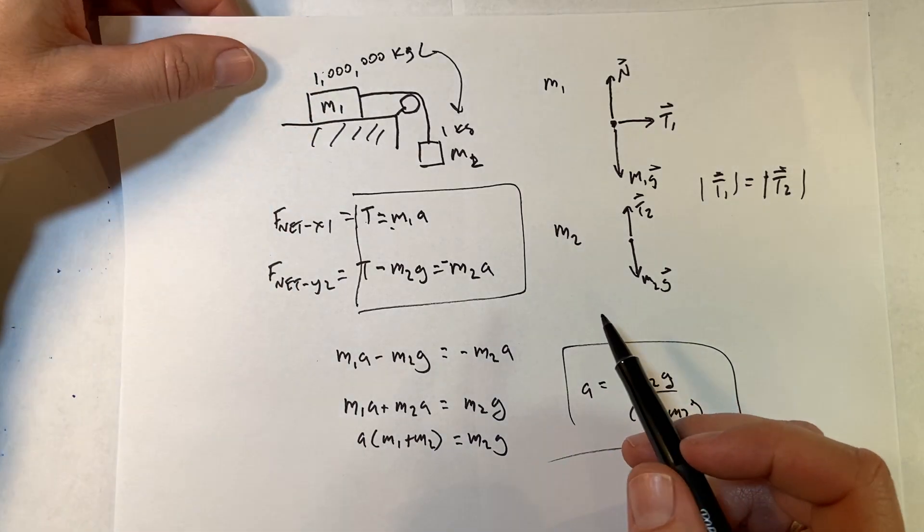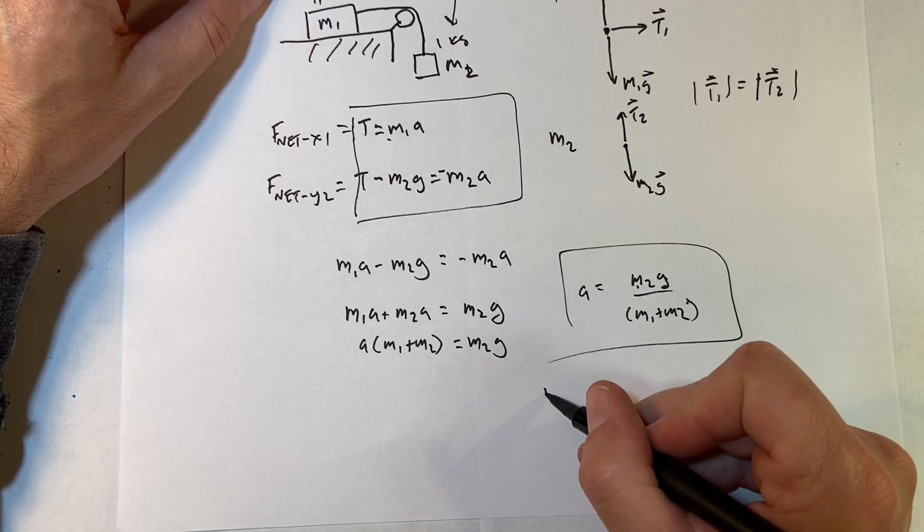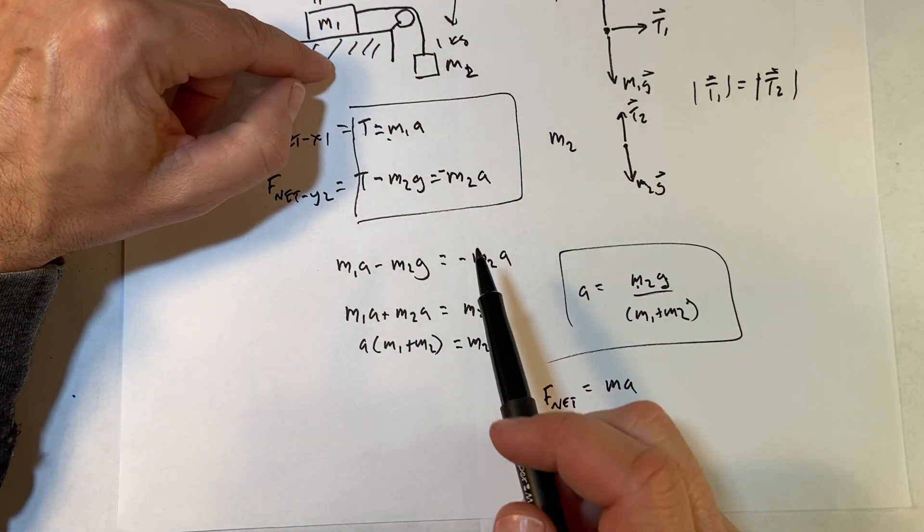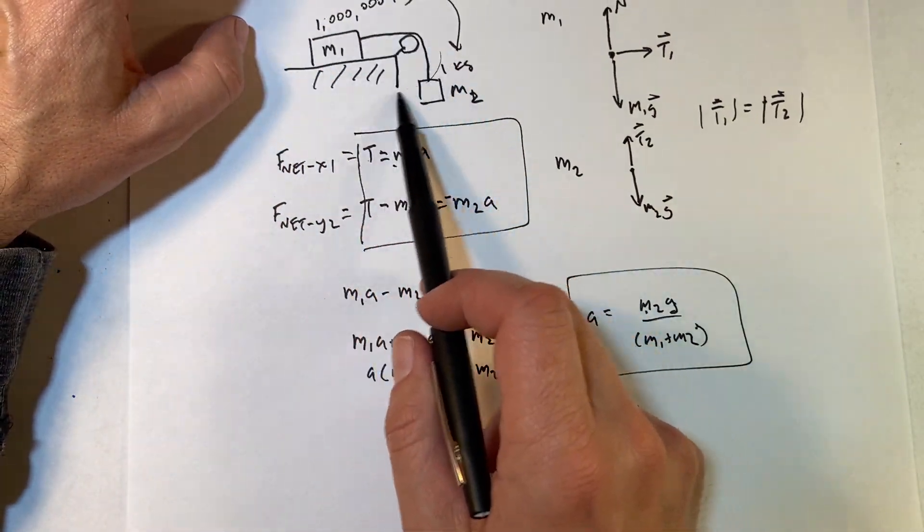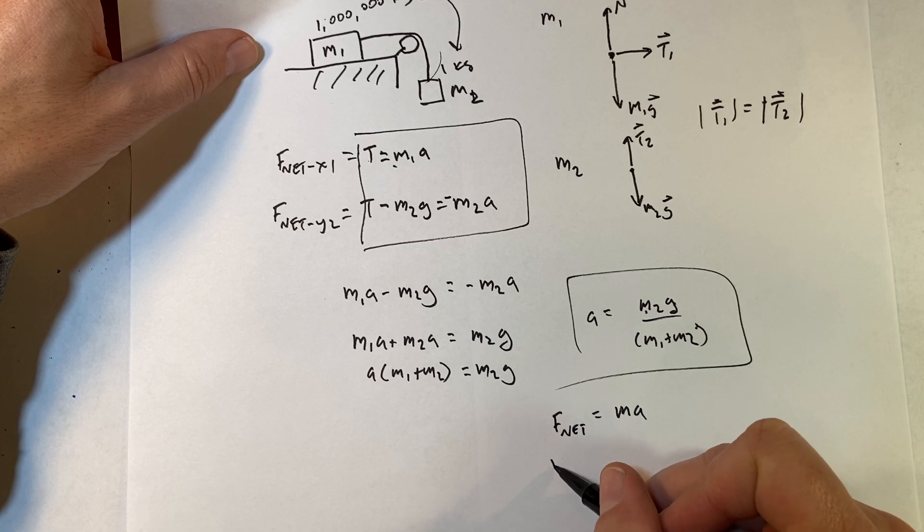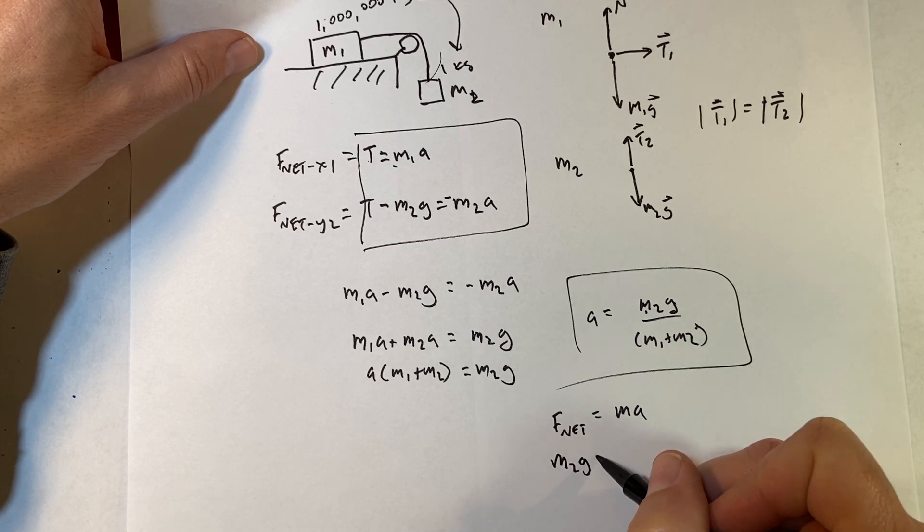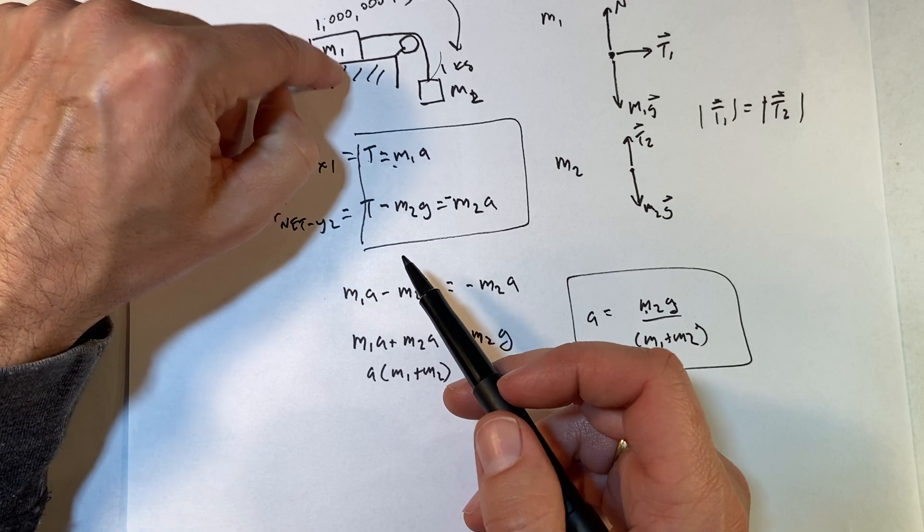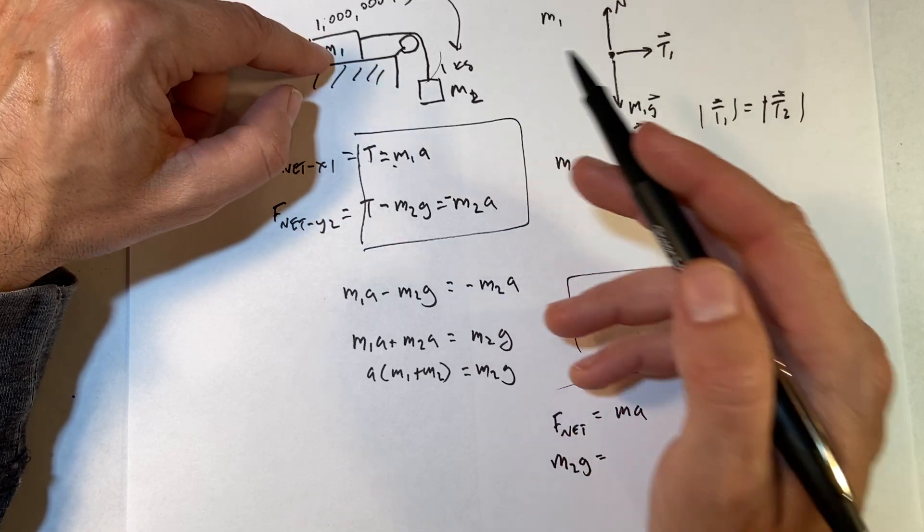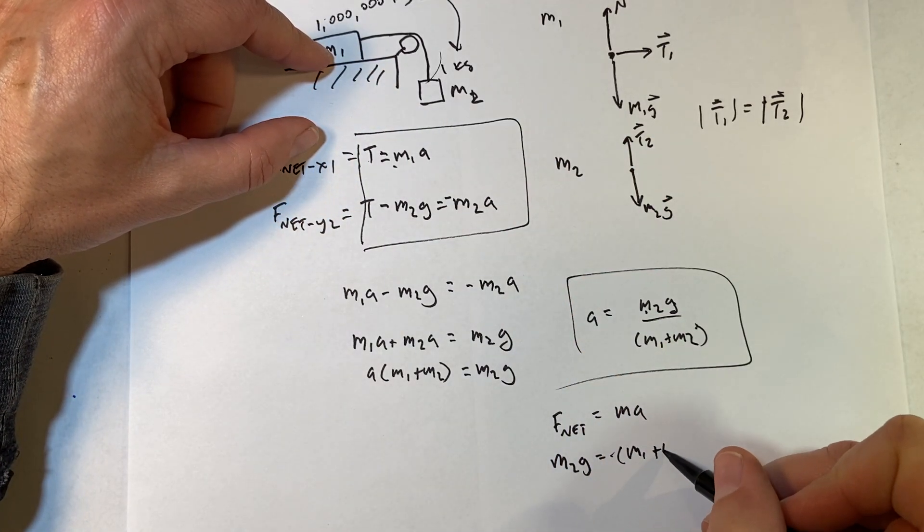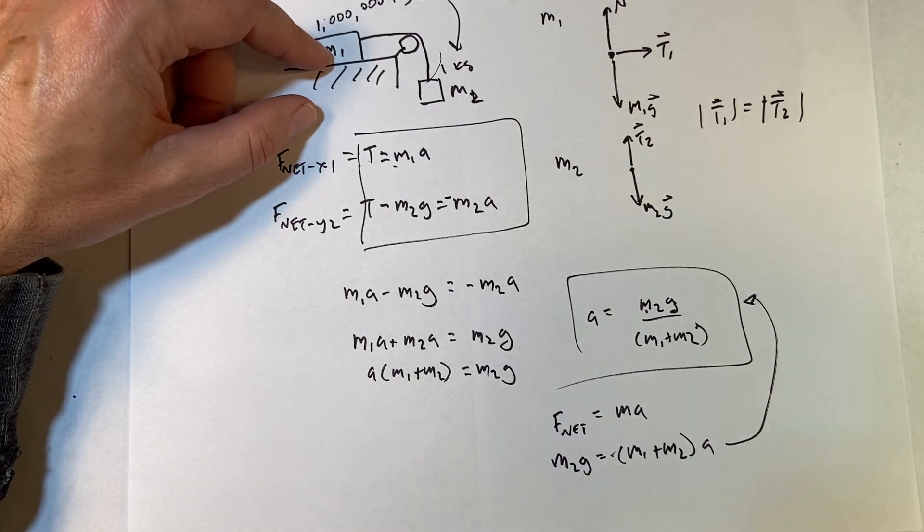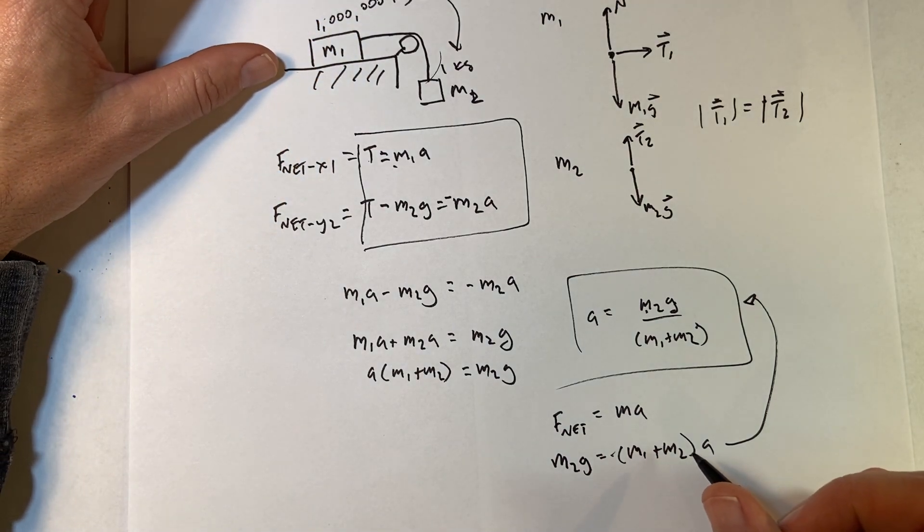Okay, there's one other way to think about this. I can think about this as one system. So I can say f net equals ma, and this is in one direction. So in this case, what force is making this thing accelerate? Well, it's the weight of m2. So the net force is going to be m2g. That's the force it pulls in this whole system, and that's going to be equal to the mass times acceleration, but the whole thing has to accelerate. So the mass is the total mass. So it's going to be m1 plus m2a. So if you solve this for a, you get the same thing. Check that out. You like that?